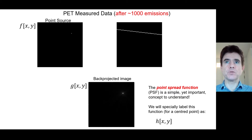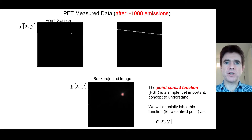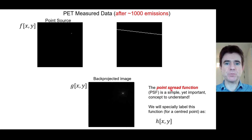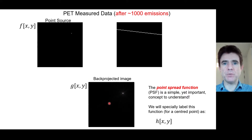After 1,000 such back-to-back photon pairs are detected and back-projected, we end up with a 1/R distribution — like spokes of a wheel intersecting in the middle. This is what we call a point spread function in our back-projected image: the original point source in the scanner field of view has been replaced by this point spread function. We specially label that function H of X and Y. Placing the point source in the middle of the field of view gives the central point spread function H(X,Y).